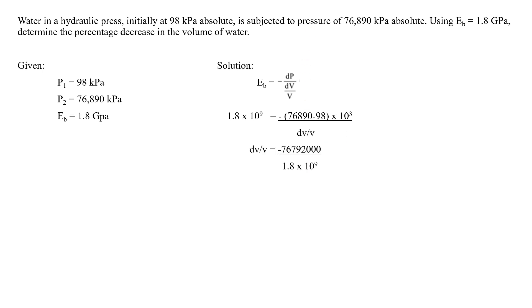Now, DV/V is equal to negative 76,792,000 over 1.8 times 10 raised to 9.